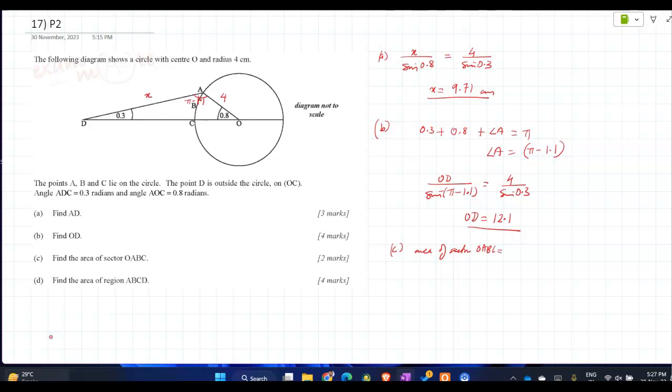O, A, B, C is equal to what? Half R square theta. So half into 4 square into theta is 0.8. Correct? So 16 into 0.4. That's 6.4. 6.4 centimeter square.